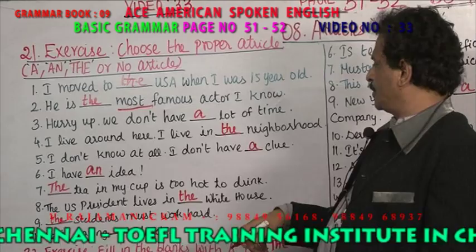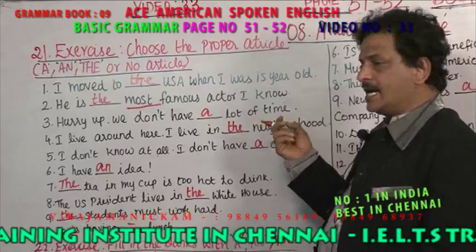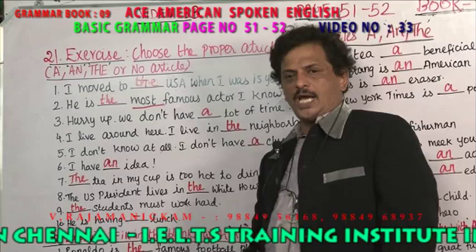I don't know at all. I don't have a clue. I do not even have a single idea. 'I have an idea' — 'idea' starts with the vowel sound I, it's a noun, so you use 'an.'